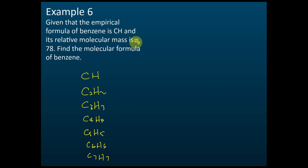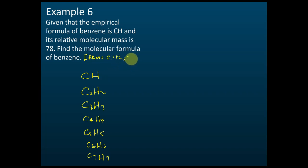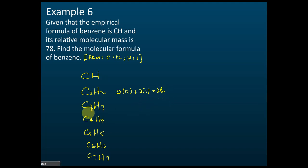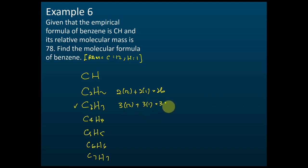But we know the relative molecular mass is 78. We can calculate the relative molecular mass for each candidate. For C2H2: 2×12 + 2×1 = 26. For C3H3: 3×12 + 3×1 = 39. For C4H4: 4×12 + 4×1 = 52. For C5H5: 5×12 + 5×1 = 65. For C6H6: 6×12 + 6×1 = 78.